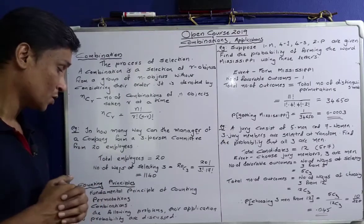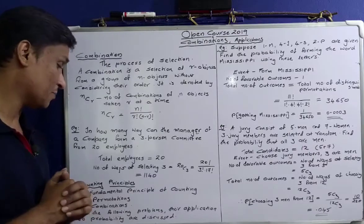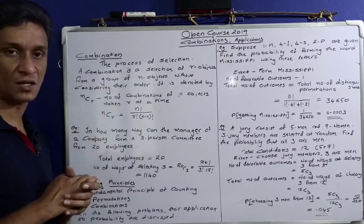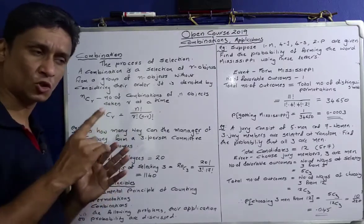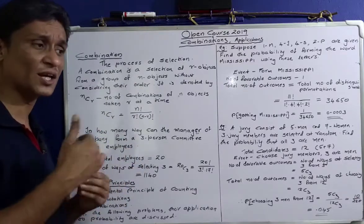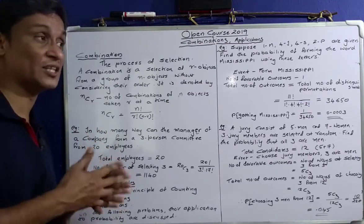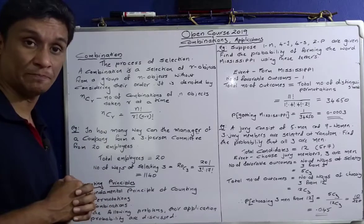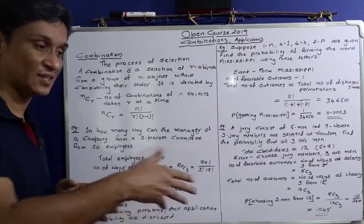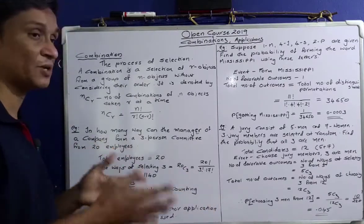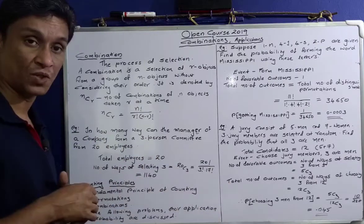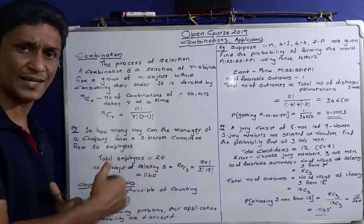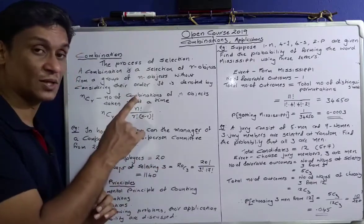In how many ways can the manager of a company form a 3-person committee from 20 employees? So 3 people are selected from 20. How many ways can the company form a 3-person committee? That is 20C3. Total number of employees is 20; number of ways of selecting 3 from 20 is 20C3.